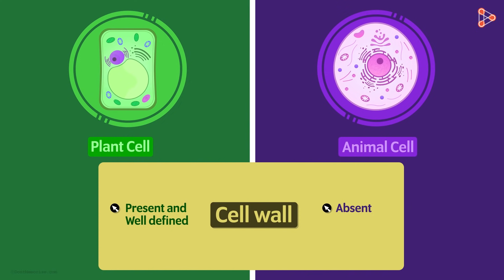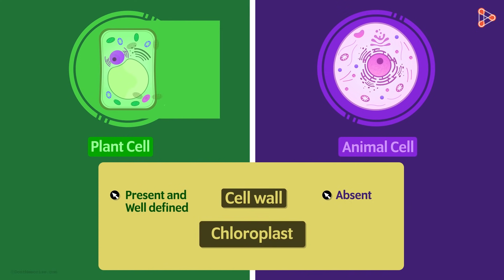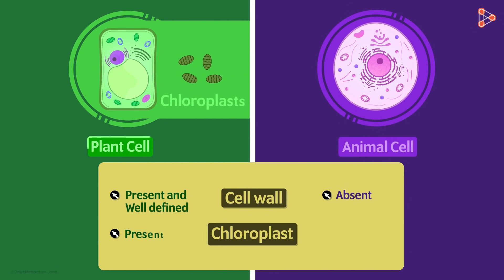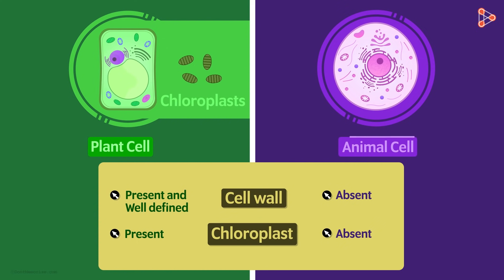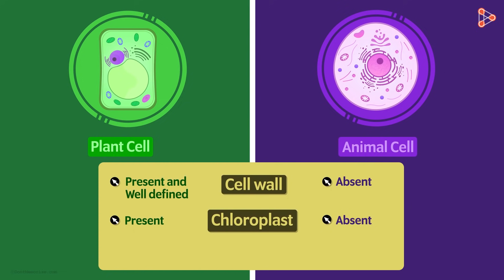The next obvious difference is the presence of chloroplast in the plant cell. As we have already studied, this is the exclusive organelle of the plant cell. It's absent in animal cells.